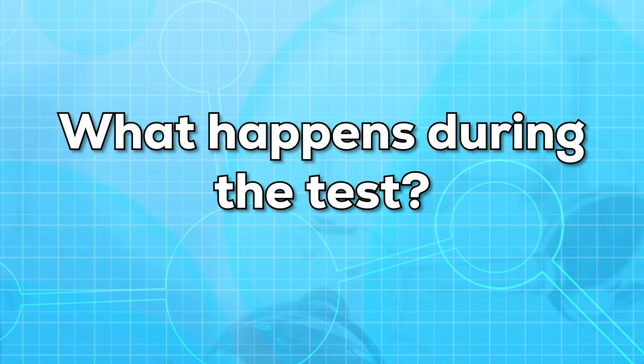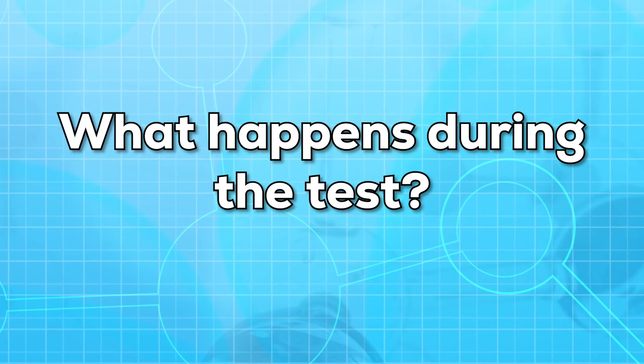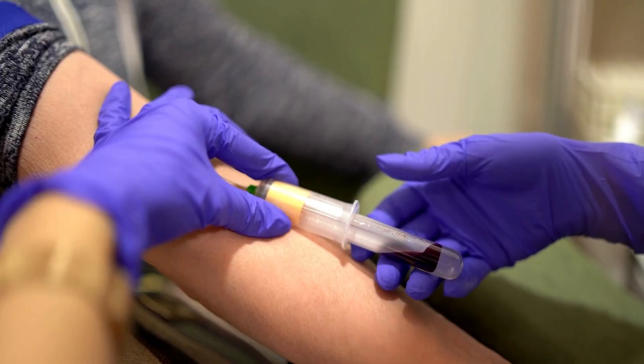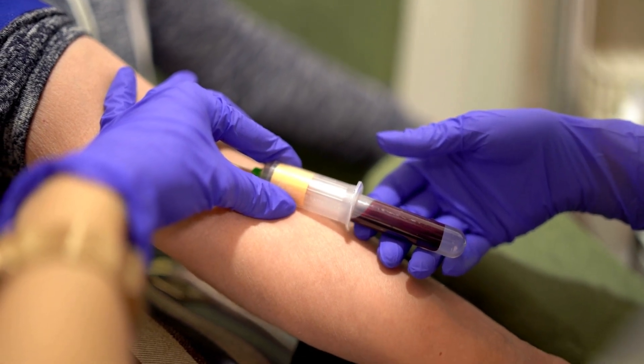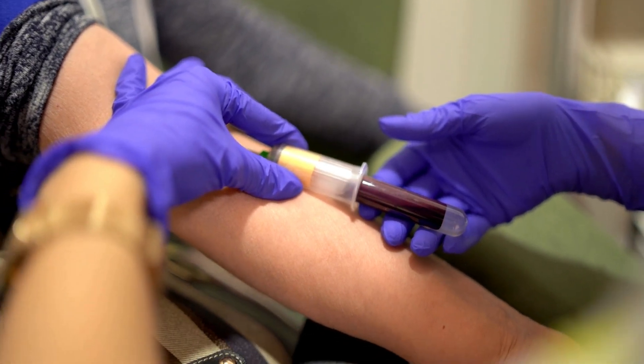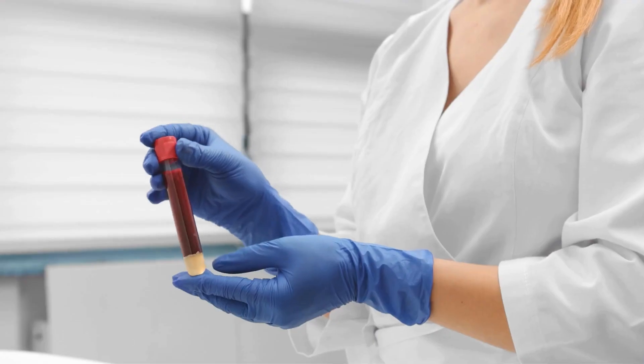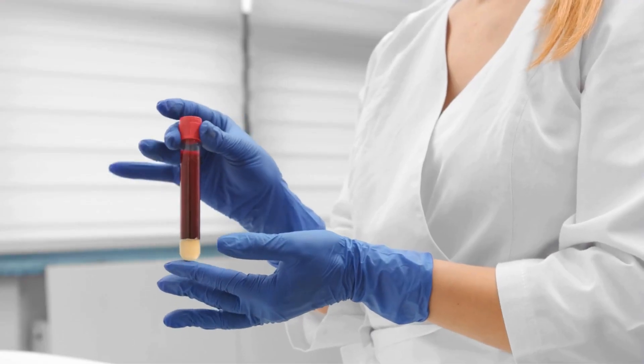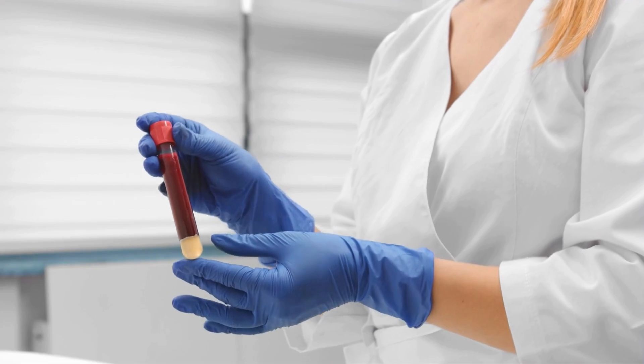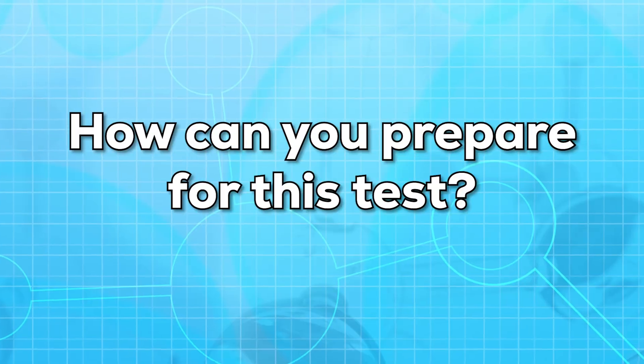Now let us see what happens during the test. For this test, a small sample of blood is withdrawn from the vein of your arm. The sample is then collected and sent to the lab. The results usually take two to three days depending on the lab.